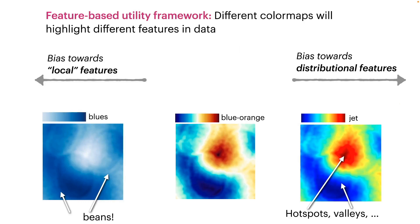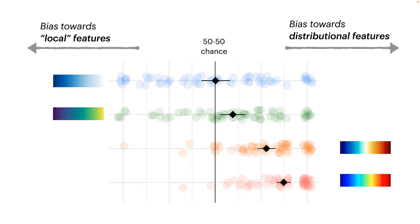we propose a framework for evaluating color maps based on what features they highlight or de-emphasize in data. We find evidence to support this framework, and show that rainbows serve a complementary communicative purpose, suggesting complementary utility to perceptual color maps that are traditionally deemed optimal by the community.